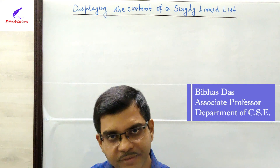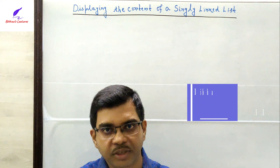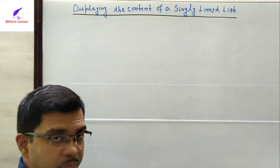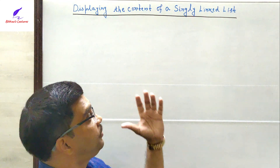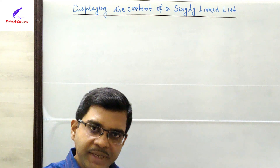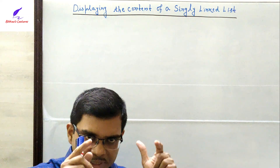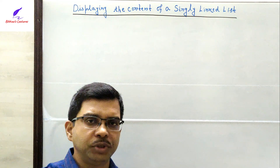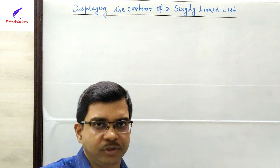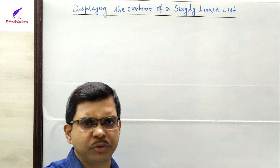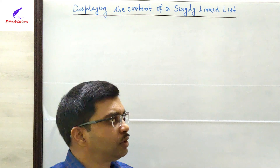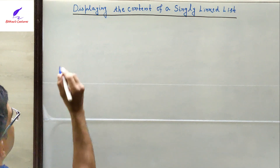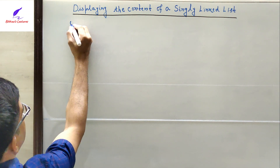Hello, dear students and learners. In this series on data structures and algorithms, today I am going to discuss how to display the contents of a singly linked list. Displaying the contents means printing the data part of each node — we are not bothered about the address part, so we will only print the data part of the linked list.